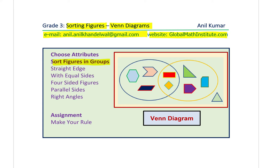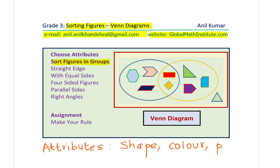For sorting figures we need to understand attributes. What are attributes? Attributes are ways of identifying a figure or describing its characteristics. Attributes include shape, color, placement, or sides and corners for shapes. All of these are attributes by which we can describe a particular shape.